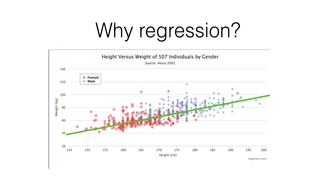Say we have a person who is 190 cm tall. We go up from there to the line of best fit, and then left to see where that lands on the weight axis. The linear model that relates height and weight in these data would predict a weight of about 87 kg.